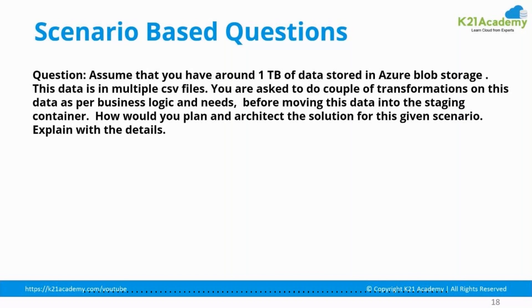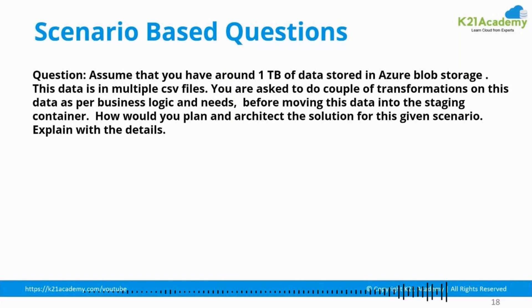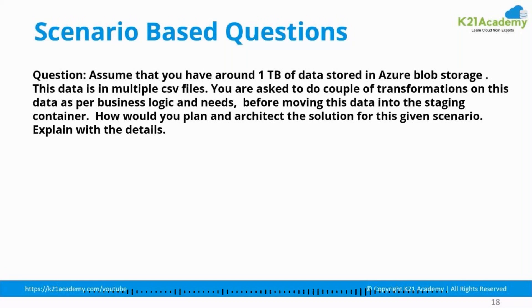Let's take another question. Assume that you have around a terabyte of data stored in blob storage. This data is in multiple comma-separated value files — delimited files. You are asked to do a couple of transformations on this data as per the business logic and needs. Before moving this data into the staging container, how do you plan and architect the solution for this scenario? Explain with details.